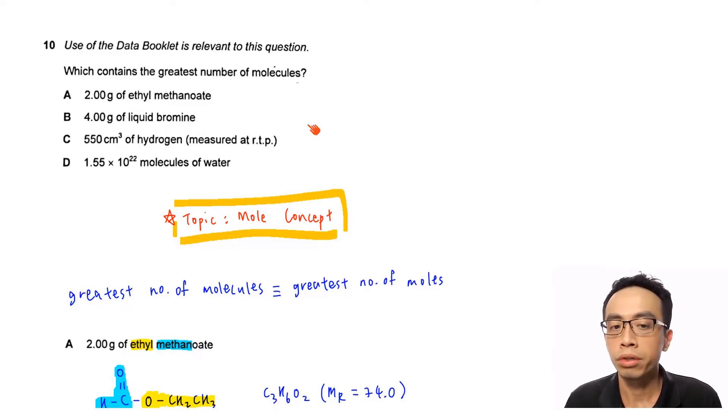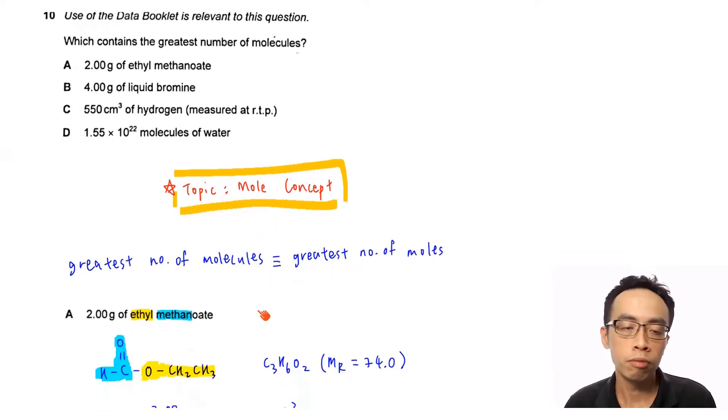Now, the topic tested in this exercise is under mole concept. And what we just need to do is calculate the number of moles for each of these options. Then, we will be able to determine which one of them will have the greatest number of molecules. We don't really need to calculate the number of molecules for all our options. Because if you have greater number of molecules, naturally, we will have greater number of moles. And we are more familiar with calculating number of moles.